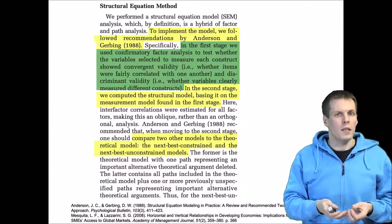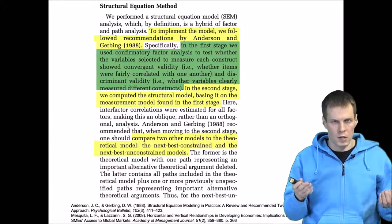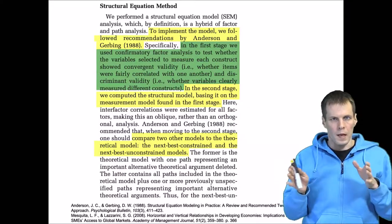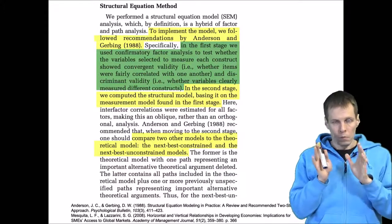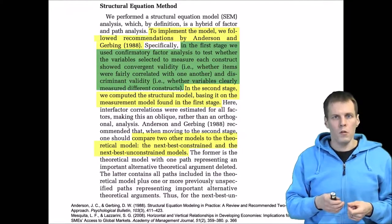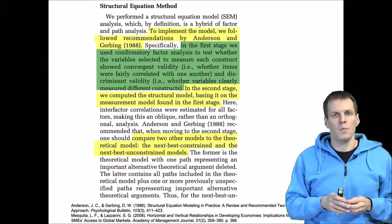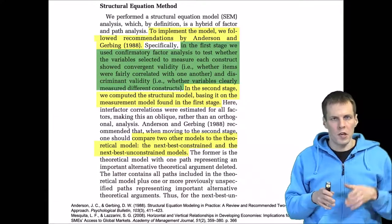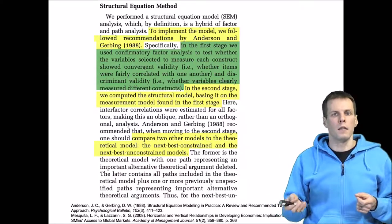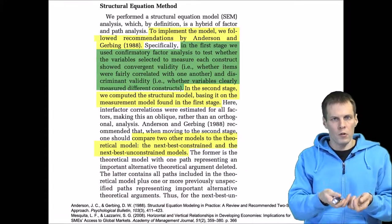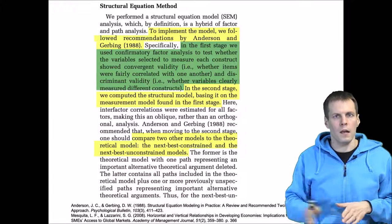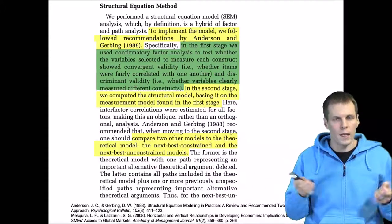The second thing this modeling approach does is assess interpretational confounding. The idea is that the identity of a latent variable depends on its indicators and how those indicators load on the latent variable. Because the model is estimated as one big model, it is possible that the loadings of the indicators change between the measurement model and the structural regression model. This indicates a problem, because it means the latent variables don't get their identity from the indicators alone but also from the model being tested. This modeling approach eliminates or at least reveals that problem.